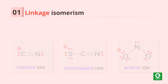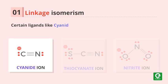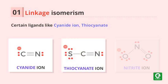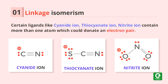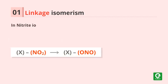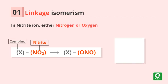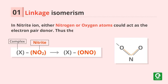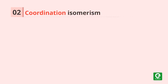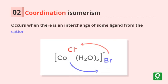Number one: linkage isomerism. Certain ligands like cyanide ion, thiocyanate ion, and nitrate ion contain more than one atom which could donate an electron pair. In nitrate ion, either nitrogen or oxygen atoms could act as the electron pair donor, thus there is the possibility of isomerism.